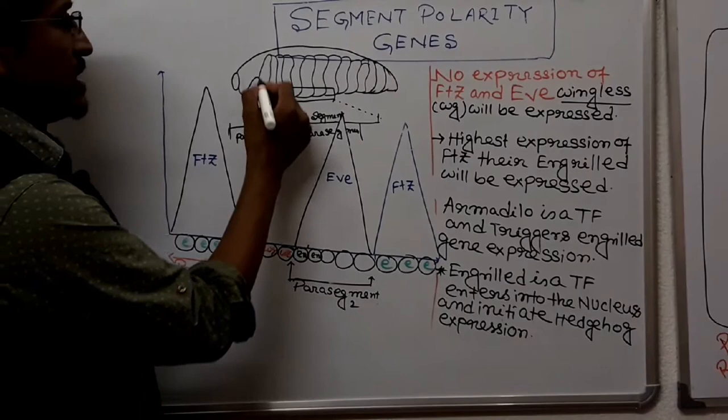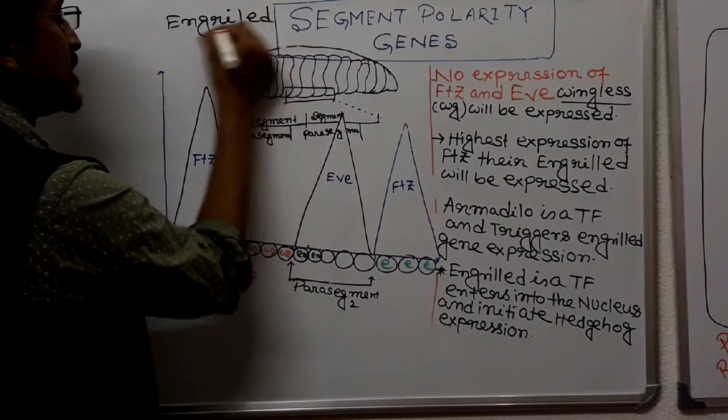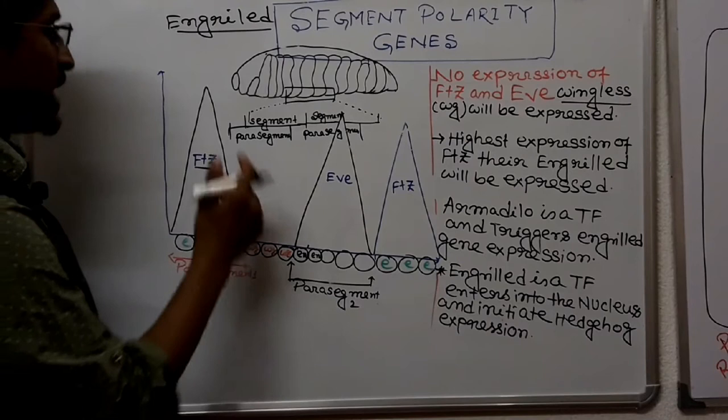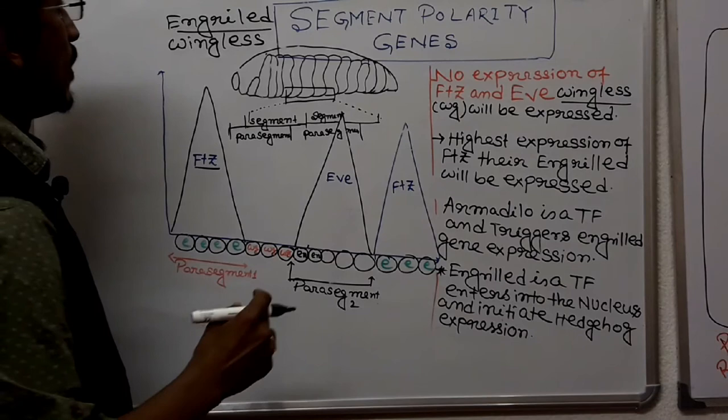This segmentation involves different important genes: one of the important genes is engrailed, another is fushi tarazu, and another is wingless. These genes play important roles. Today we will learn about how the transcription of the wingless and engrailed genes occurs.